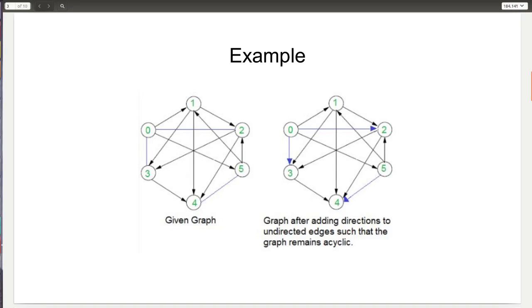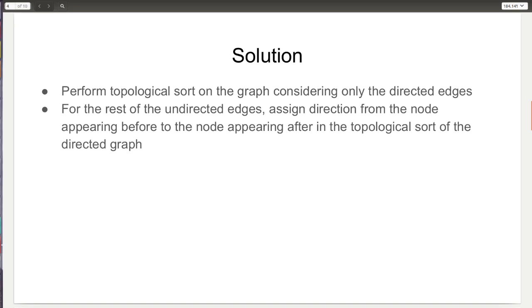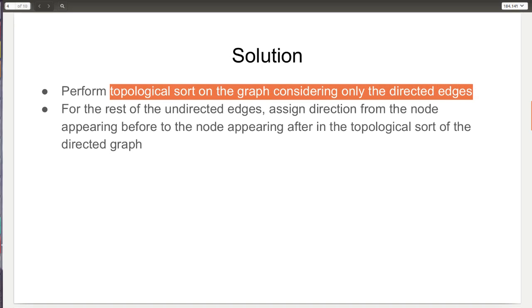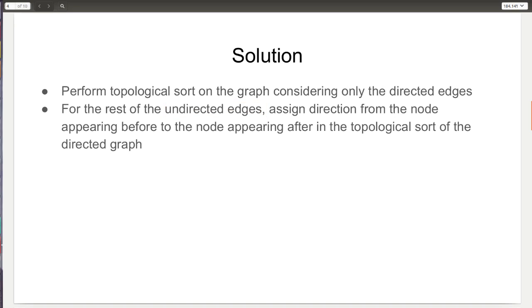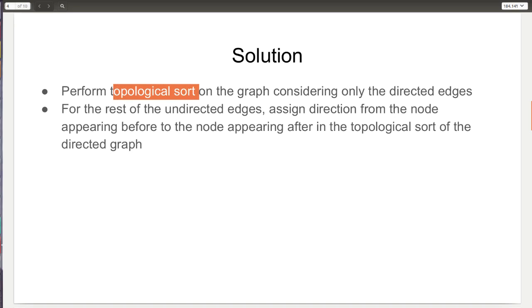Now that we have a firm understanding of what we have to do, let's look at how to do it. It's a two-step solution. In the first step, we perform topological sorting on the graph considering just the directed edges. In the second step, for every undirected edge whose direction we have to assign, we pick up both the nodes on both sides of the undirected edge and assign direction from the node appearing before to the node appearing after in the topological sort of the directed graph.